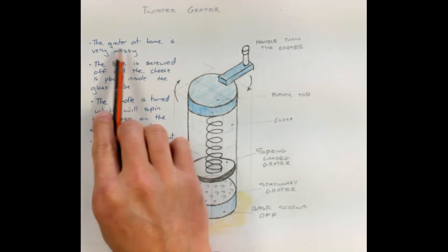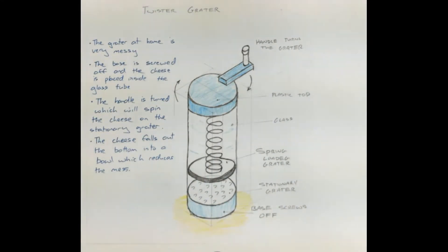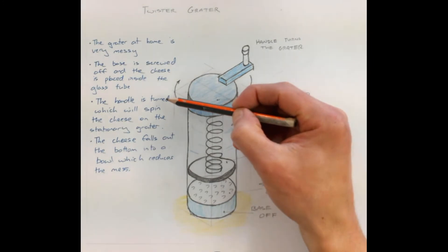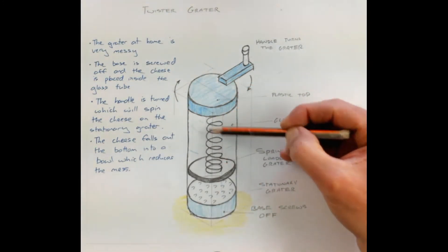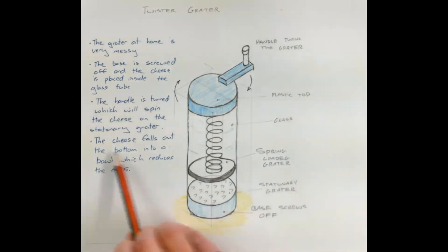And then I've got my notes. So it says the grater at home is very messy. The base is screwed off and the cheese is placed in the glass tube. Then I have the handle is turned which will spin the cheese in the grater. So the handle turning will spin the cheese and then the cheese falls out the bottom into a bowl which reduces the mess.